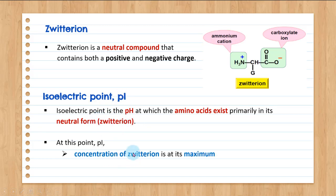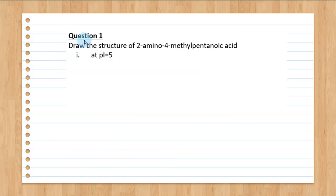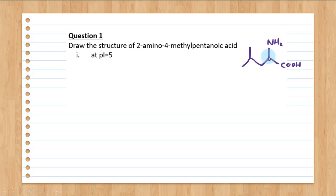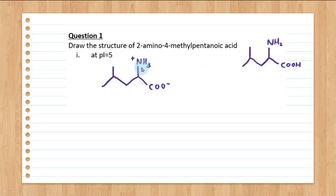At the isoelectric point, the concentration of the zwitterion is at its maximum and the net charge equals zero. For example question one: draw the structure of 2-amino-4-methylpentanoic acid, then draw its zwitterion. The compound has five carbons in the main chain, NH2 at carbon two (the alpha carbon), and a methyl substituent at carbon four. When it exists at pI = 5, the NH2 becomes NH3⁺ and the COOH becomes COO⁻ — this is the zwitterion structure.